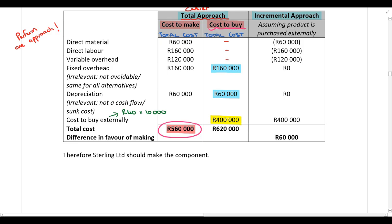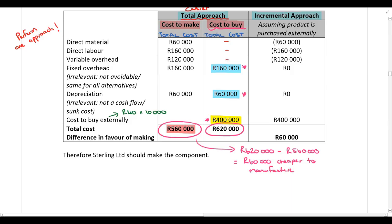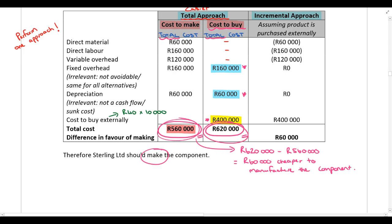Using the total approach: if I make the product it costs 560,000 rand; if I buy it costs 620,000 rand — which includes the purchase cost plus the fixed overhead and depreciation I still incur. Comparing the two, it is 60,000 rand cheaper to manufacture the components, so therefore the company should make the components.